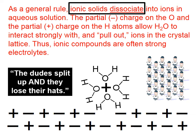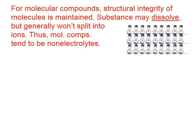Typically, when ionic solids dissociate, basically what we're saying is the dudes split up and they lose their hats — the dudes come apart and separate from one another, and they also lose their hats. For molecular compounds, the structural integrity of molecules is maintained. The substance may dissolve, but generally won't split into ions. Thus, molecular compounds tend to be non-electrolytes.